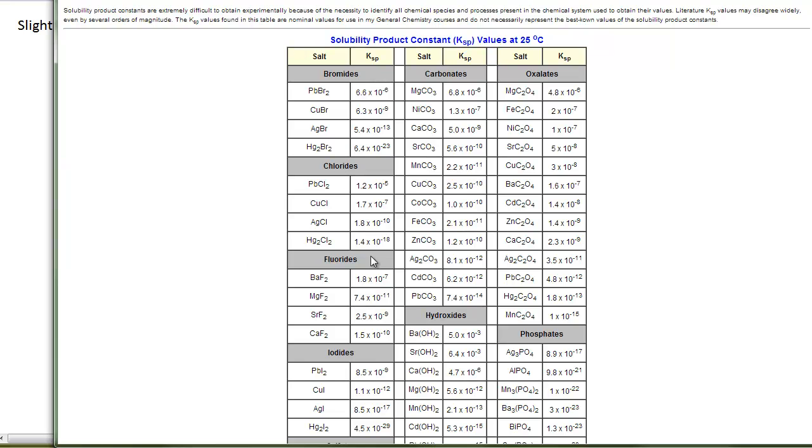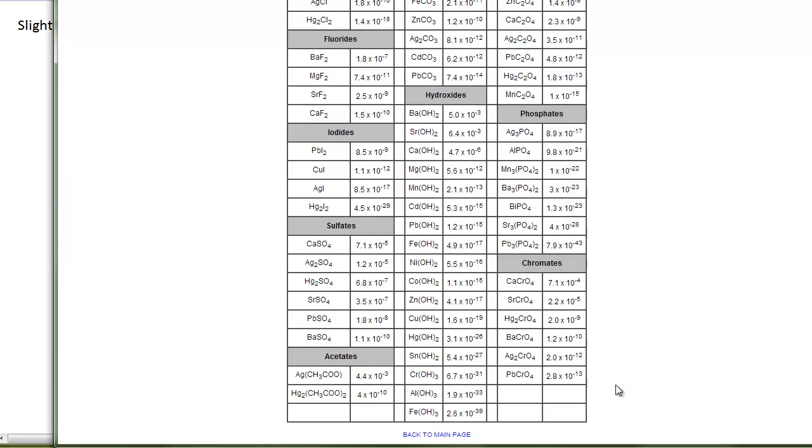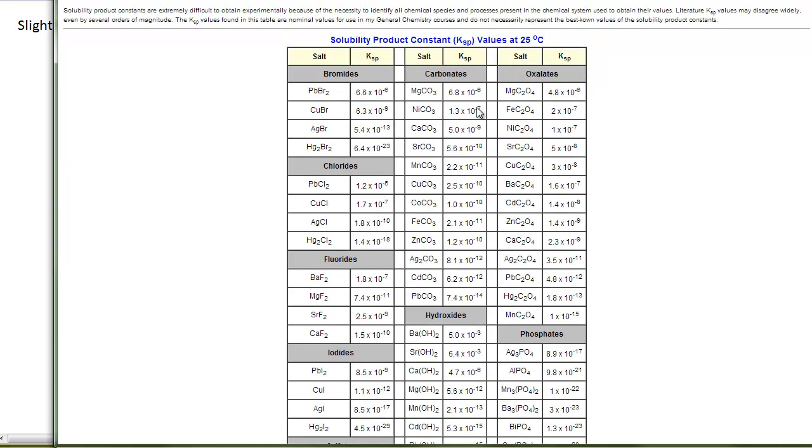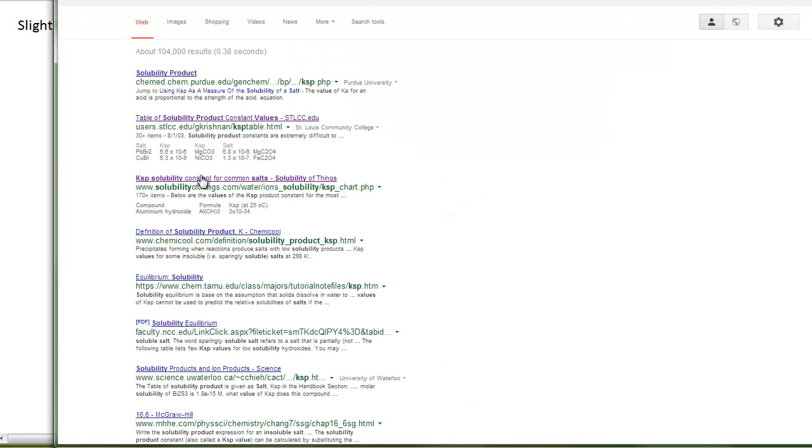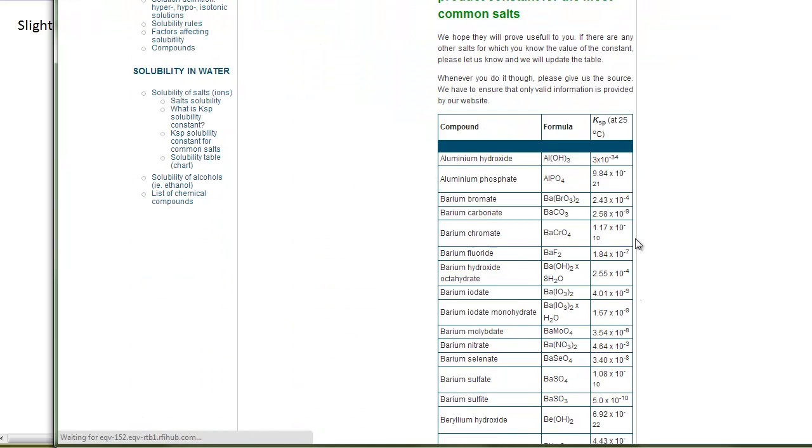It is organized by type of anion - fluorides, chlorides, bromides, carbonates, etc. We see that in general these are very, very small numbers, times 10 to the minus something. One thing that you might note is that the numerical value for the Ksp may vary slightly depending on which table you look at. These are experimental values, and so we do often see a variety of values.